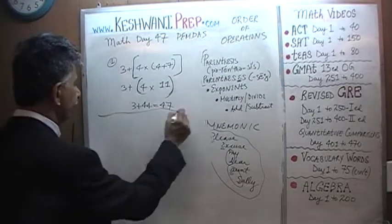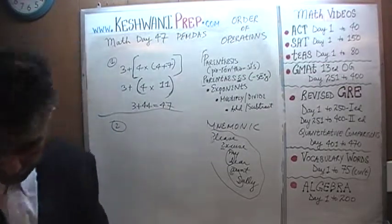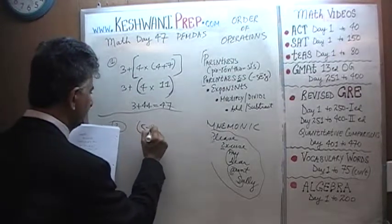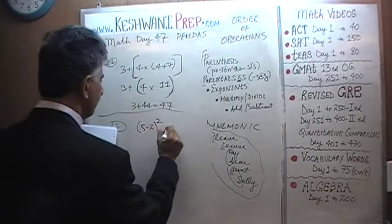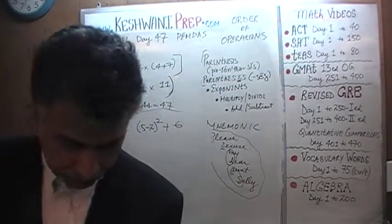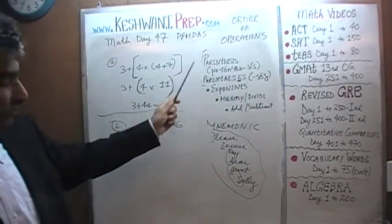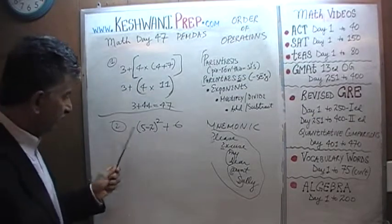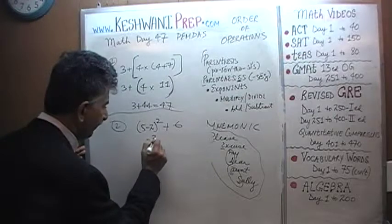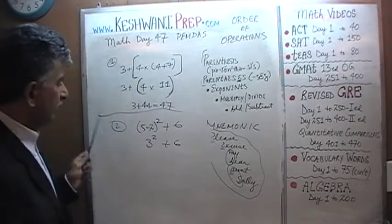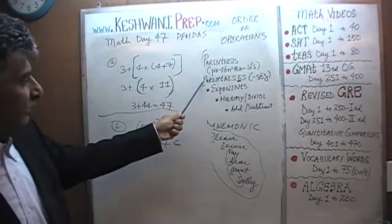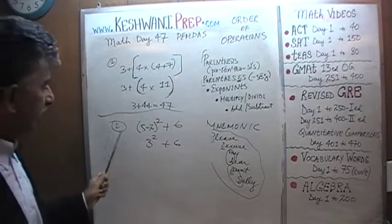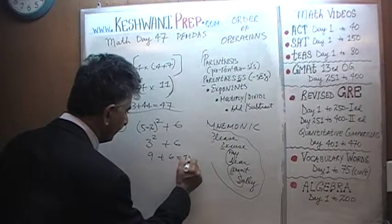Number 2: We have (5 minus 2) squared plus 6. We first do the parentheses: 5 minus 2 is 3, and 3 is being squared plus 6. After taking care of the parentheses, next come exponents: 3 squared is 9. Then 9 plus 6 gives us 15.